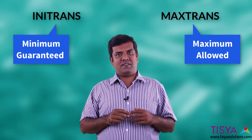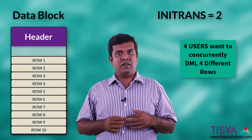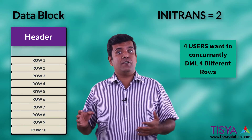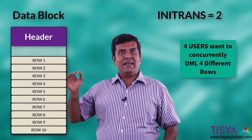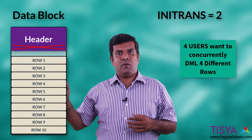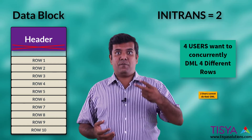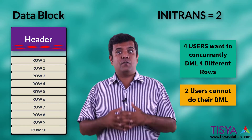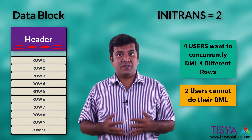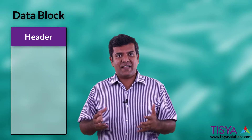Compared to a table with the same block size but INITRANS set to two, which reserves space for only two transaction slots. What happens if your block has INITRANS of two but there are four concurrent DMLs from four different users on four different rows in the same block? The header will have to grow. If there is no free space in the block, the header cannot grow, and only two transactions can be performed — the other two will fail with an error saying it could not get the transaction slot.